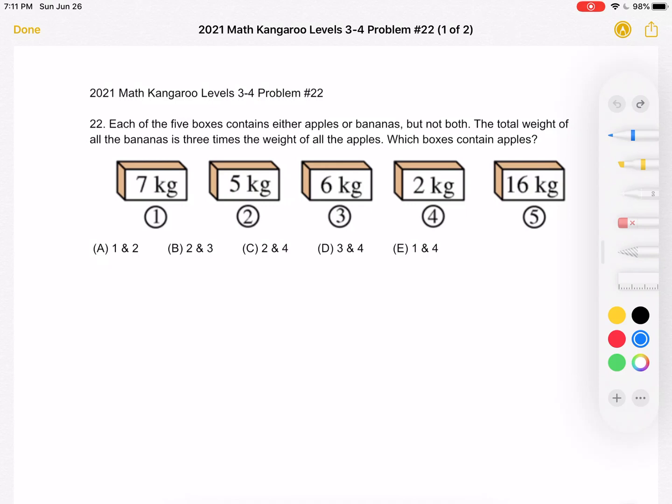A, 1 and 2. B, 2 and 3. C, 2 and 4. D, 3 and 4, or E, 1 and 4?